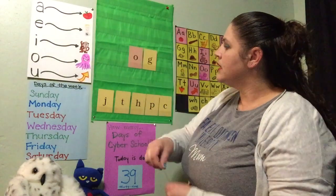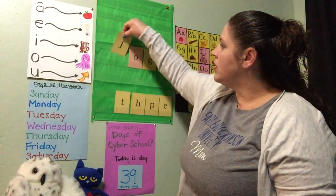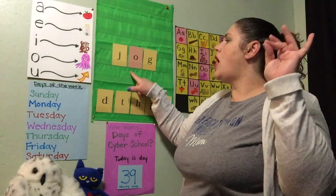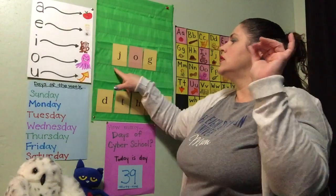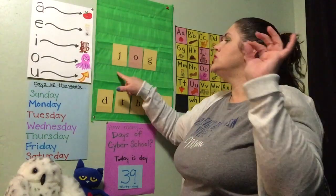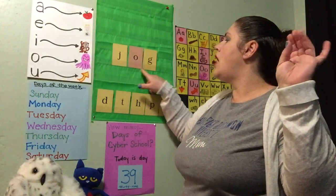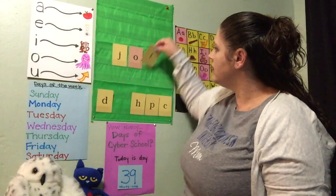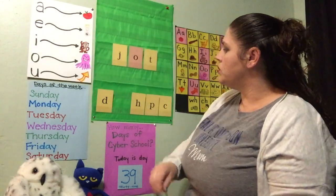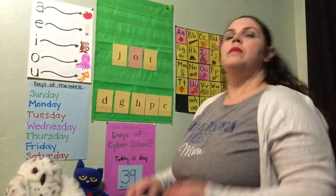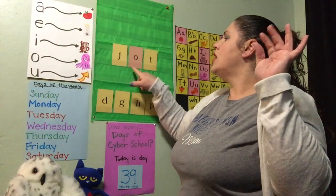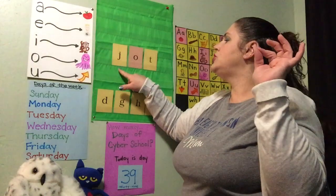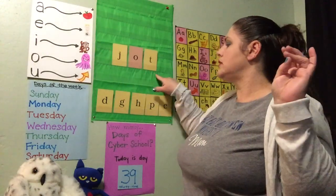I'm gonna change that beginning letter to make a new word. Elbow up, thumb and pointer finger together. J, ah, g — jog. One more time: J, ah, g — jog. I'm gonna change that ending letter and make a new word. Elbow up, thumb and pointer finger together. J, ah, t — jot. One more time: J, ah, t — jot.